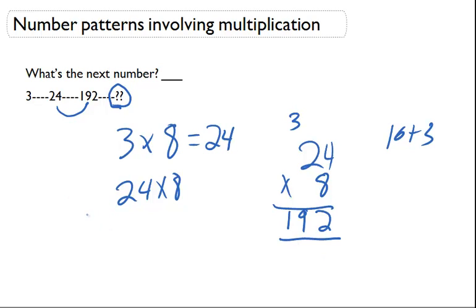So we know we're on the right track now. So all I have to do is 192 times 8, and we're going to get that last number.